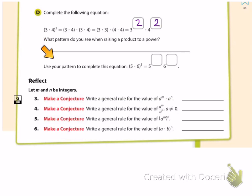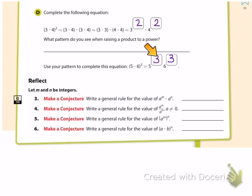How could we apply that pattern to complete this equation: five times six to the third power? That's equal to five to the third power times six to the third power. Note that we don't even need the dot for multiplication — two expressions placed next to each other is another way of expressing multiplication. So five to the third, six to the third is the same as five to the third times six to the third.